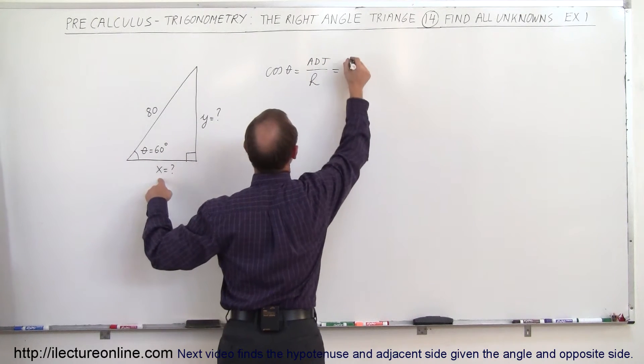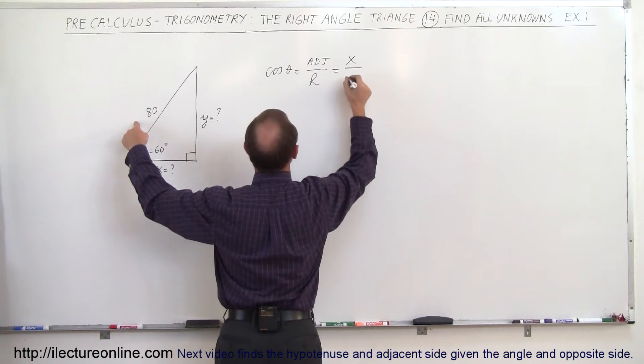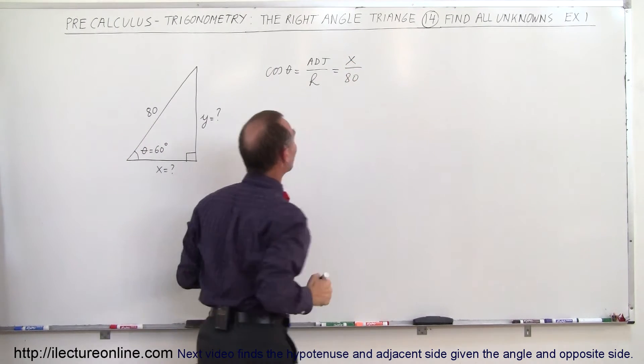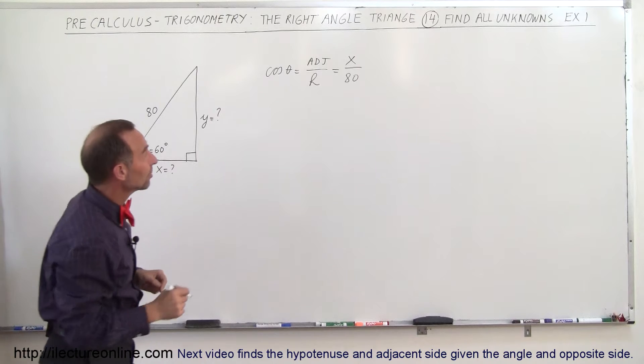In this case, the adjacent side is x and the hypotenuse is given as 80, and we're looking for x. So we can solve that equation for x now.